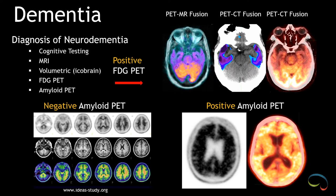A negative amyloid PET has this sort of appearance — the white matter looks dark, but the cortex looks light. A positive PET study shows diffuse binding of the amyloid tracer to the amyloid plaque in the cortex. The images on the right are an avidly positive amyloid PET study, and this is a good indicator that the patient may indeed have Alzheimer's disease. Amyloid PET can detect Alzheimer's disease up to 20 years before the patient is clinically symptomatic.